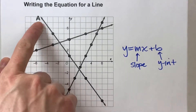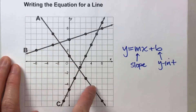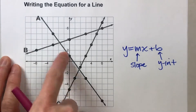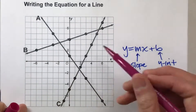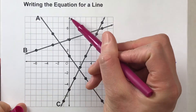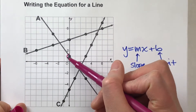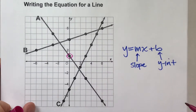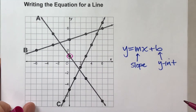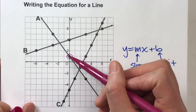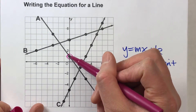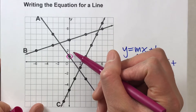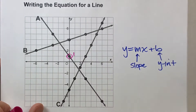Let's start with graph A. If you're looking for the y-intercept, here's the y-axis, and here's where it crosses — the line crosses the y-axis at 1. So I know my y-intercept is 1.